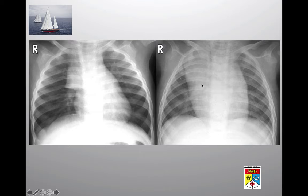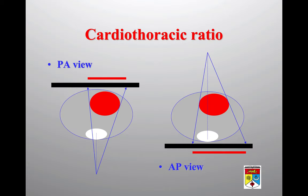Sometimes the thymus can be hyperplastic due to infection, as a sort of reaction to the infection itself. It can be quite large, but you can still see the lucency behind it representing aerated lung, and the trachea is not shifted or compressed. This is a normal thymus. This typically occurs in the neonatal period. As age increases, the thymus begins to involute and become fatty, and by age eight it will have shrunk.